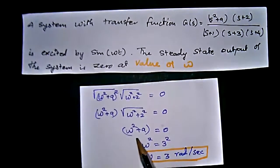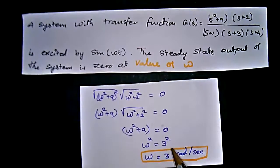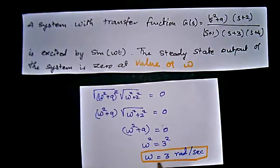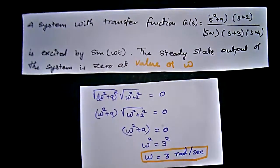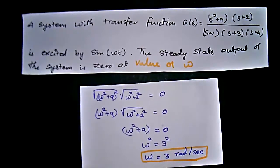Setting ω² + 9 = 0 gives ω² = 9, which means ω = 3 radians per second. This is the value of omega that makes the steady state output of the system equal to 0 when the input is sin(ωt). Thank you, your comments are welcome.